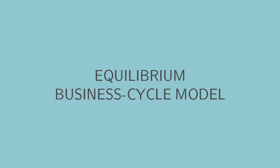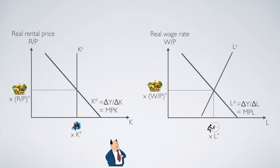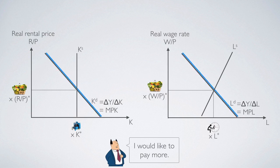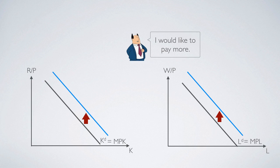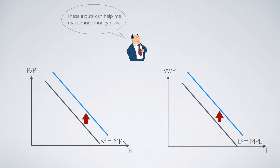We start from the equilibrium business cycle model and how to apply it to understand the business cycle. One major reason that drives business cycles up and down is because something happens that suddenly makes the firm owner want to pay more for its labor input and capital input. When this happens, labor demand and capital demand will increase, and output will increase as well. This means the boss must think that these inputs can help him make more money now, implying that their productivity is higher.